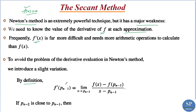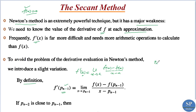By definition, we know f'(x) at the point a is equal to the limit as x approaches a of [f(x) − f(a)] / [x − a]. This is the definition of the derivative of f at the point a. So the derivative of f at the point p_{n−1} is equal to the limit as x tends to p_{n−1} of [f(x) − f(p_{n−1})] / [x − p_{n−1}], replacing a by p_{n−1}. Here p_n is the nth approximation of the root p.